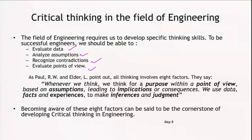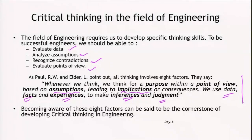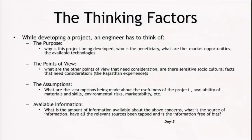R.W. Paul and Elder have pointed out eight factors which are very important for critical thinking for engineers. They say: whenever we think, we think for a purpose, within a point of view, based on assumptions, leading to implications or consequences. We use data, we use facts and experience, and make inferences and judgments. I would like you to think of these eight factors as the cornerstone of critical thinking in the field of engineering. Let us briefly examine these eight points.